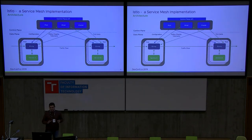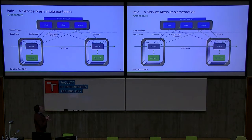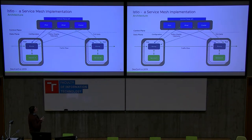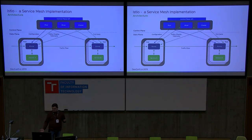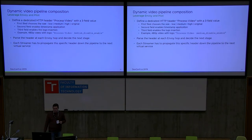The project we used is Istio. The basic architecture is split into data plane and control plane. The data plane is essentially a set of Envoy proxies intercepting all ingress and egress traffic from your application. They are controlled by the Pilot. Taking this as the basic architecture, we moved to defining how we can leverage the service mesh to build our dynamic video pipeline.